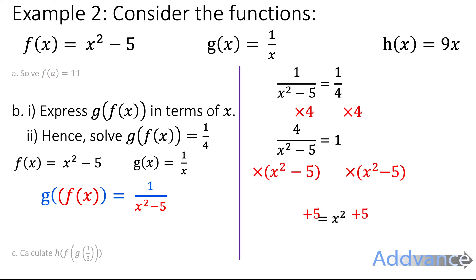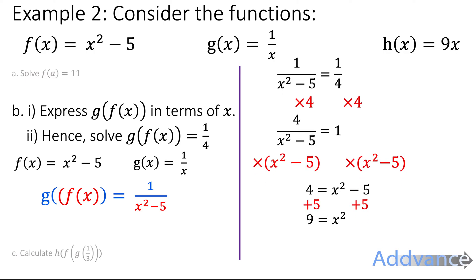x squared equals 9. And then we square root of both sides. The square root of 9 is plus or minus 3. Again, the square root of something is plus or minus. And we've solved part b.